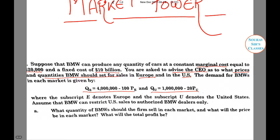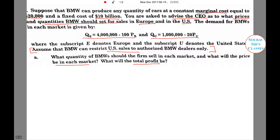We are given an assumption that BMW can restrict US sales, which denotes its market power. Now let's go into the first question: what quantity should BMW sell in each market, what should the price be in each market, and what would the total profit be? With separate markets, BMW chooses the appropriate levels of QE and QU to maximize its profits. Let's denote profit with PI.